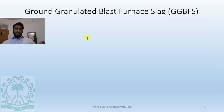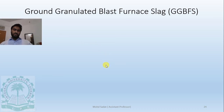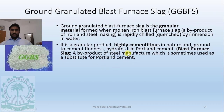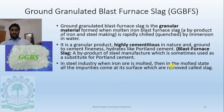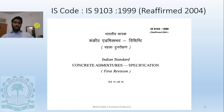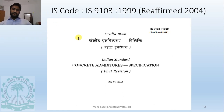GGBFS — Ground Granulated Blast Furnace Slag — is a byproduct of iron and steel manufacturing. In the molten state, impurities rise to the surface, are removed, and this material is called slag. It can be used as a substitute for Portland cement and also as an admixture in concrete.